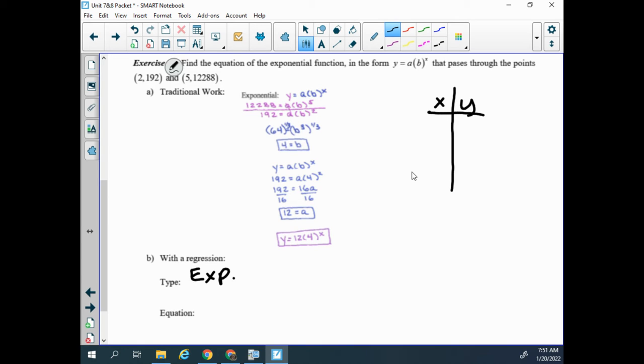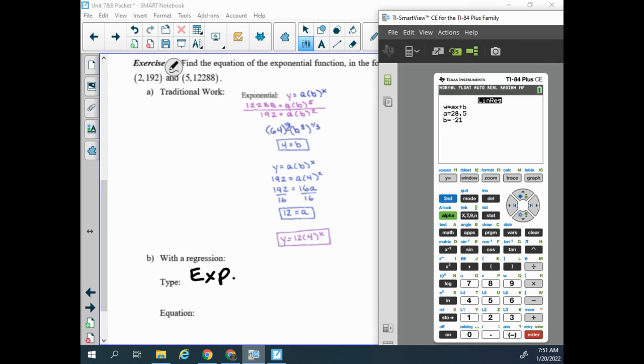So I put my points in a table, 2, 192, and 5, 12,288. Over to our stat menu.